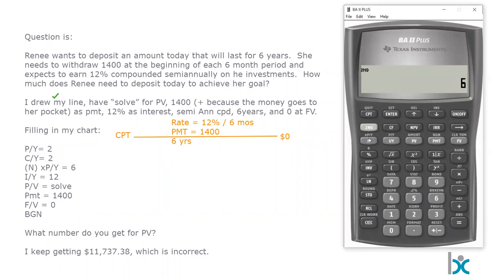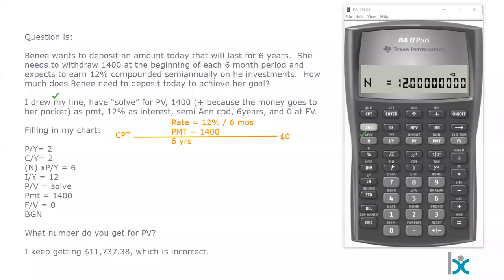Now we do 6, second function, times PY. A very common error with this calculator is not hitting N at this point. If you don't hit N, you will not get the right answer. You have to do N equals 12. The calculator has literally just done six years times two periods per year — six times two is 12. The times PY button does exactly what it's supposed to do.